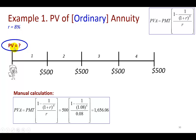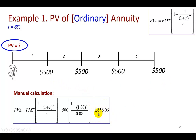Alternatively, even faster, we can use the present value for annuity formula — plug and play — and we find that the present value of this set of cash flows comes out to $1,656.06. This is the current value of these cash flows; you should be indifferent between this amount and receiving $500 each year for four years.